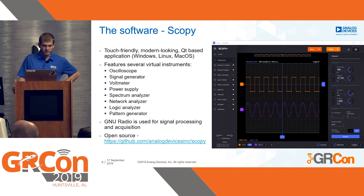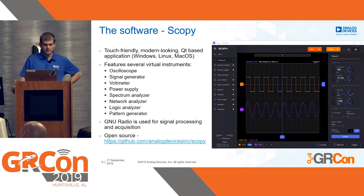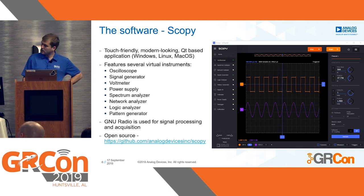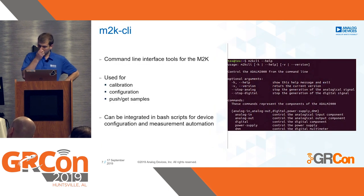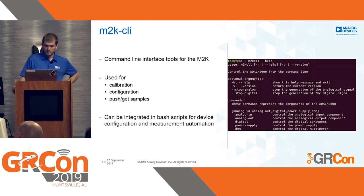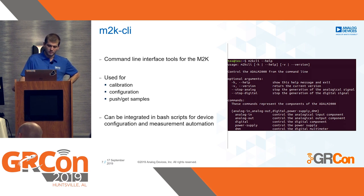The software is called Scopy. It's a touch-friendly, modern-looking application that leverages GNU Radio to implement virtual instruments such as the oscilloscope, signal generator, voltmeter, power supply, spectrum analyzer, network analyzer, and a bunch of logical instruments. Scopy is open source and still under active development. The M2K CLI is a set of command line tools for calibration and configuration of the device — no extra software needed for basic tasks. You can power up a bash console and create a script to automate your measurements and configuration.